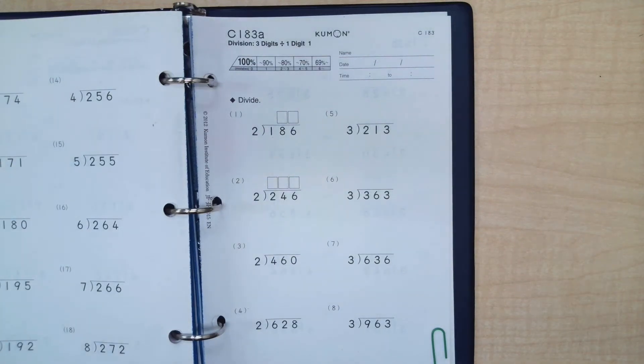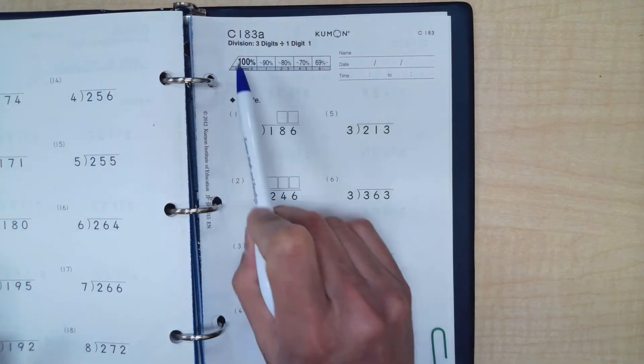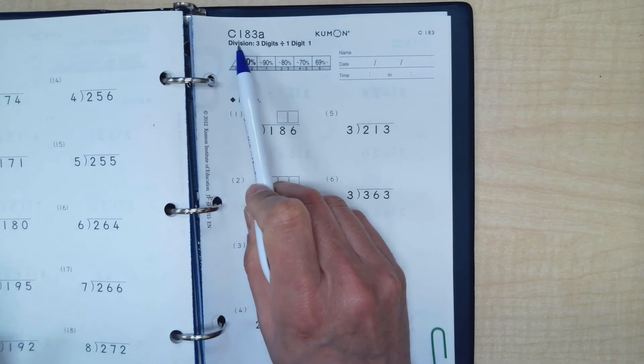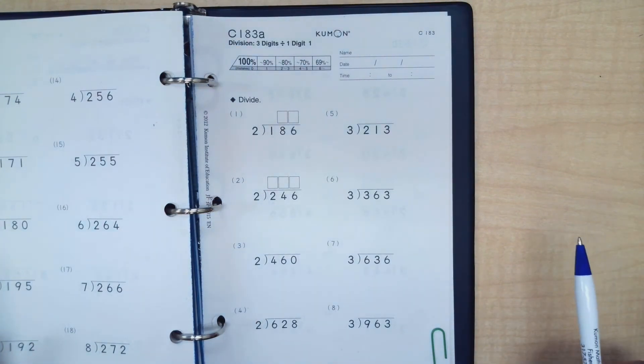This video is intended for Kumon Fisher's West students. Today we are going to do Level C, page 183. We are going to take a look at a few pages that are related to that.